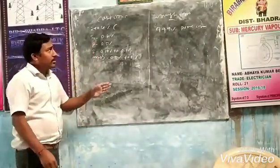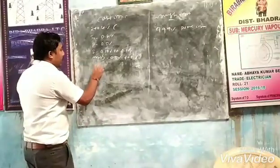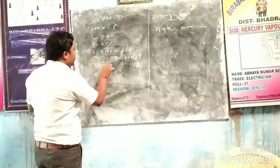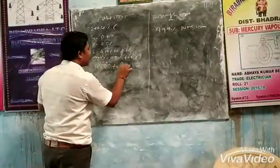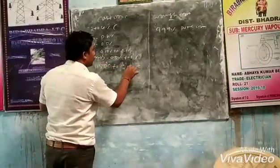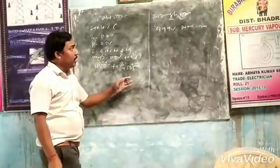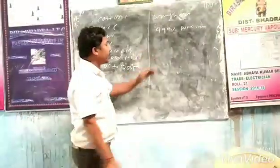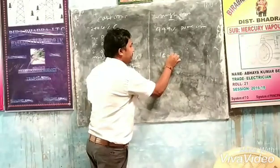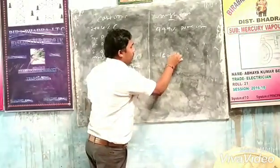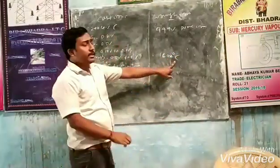Cast iron has a melting point of 1,150°C to 1,250°C. In the case of wrought iron, its melting point is 1,600°C.